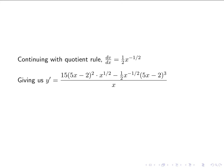Putting this into the quotient rule, we have 15 times (5x minus 2) squared — that's u prime — times x to the 1 half — that's v — minus 1 half x to the negative 1 half — that's v prime — times (5x minus 2) cubed — that's u — all divided by x, which is v squared. We're squaring the square root, they cancel, leaving just x. You could simplify this further, but it's still going to be complicated. The most you need to do is combine any coefficients, and we don't have matching ones here, so we're done.